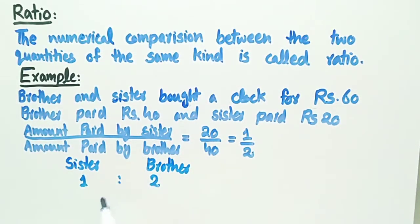We read it as 1 ratio 2, but it cannot be read as 2 ratio 1 because by changing the order of elements of a ratio, the value is also changed. Therefore, 1 ratio 2 is not equal to 2 ratio 1.